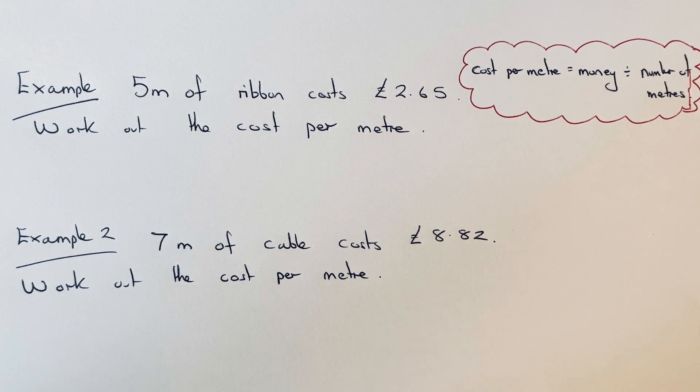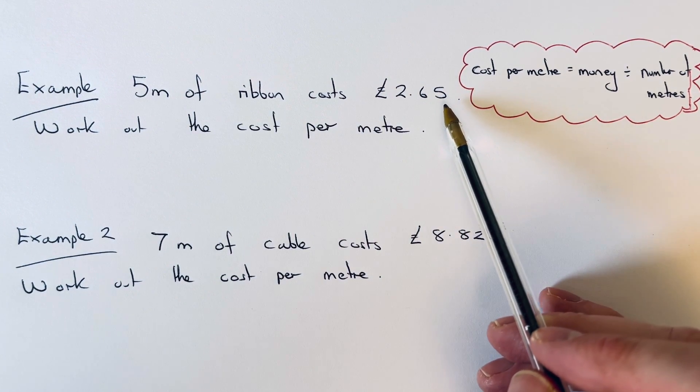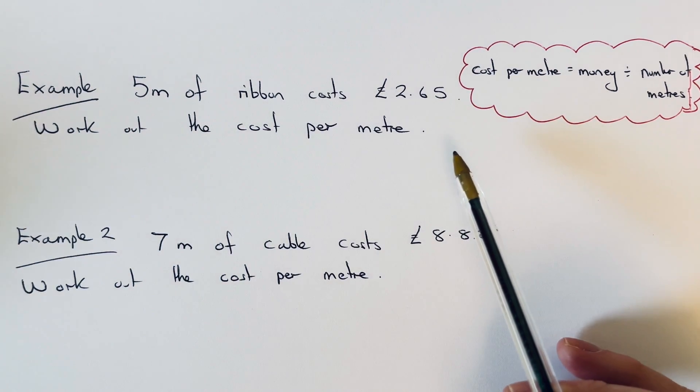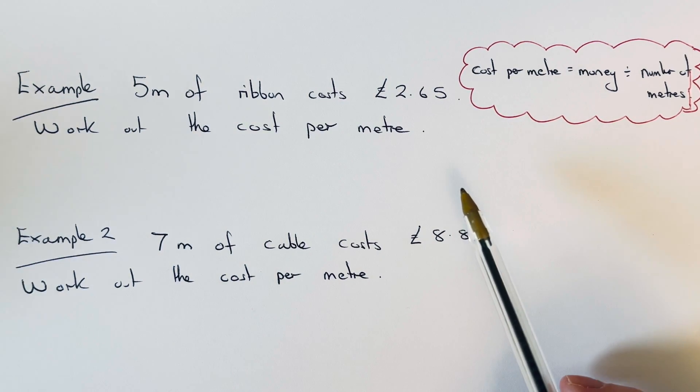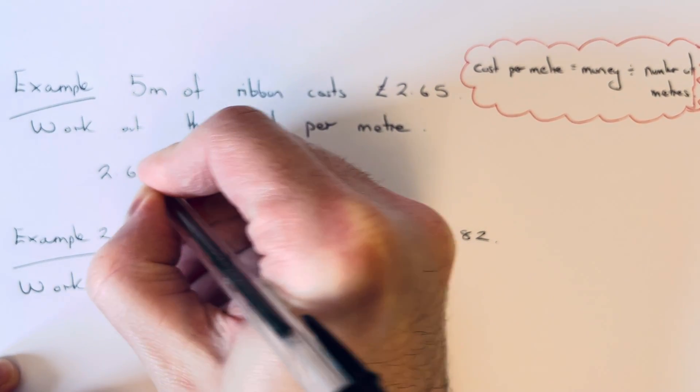Let's have a look at the first example. Five meters of ribbon cost £2.65. Work out the cost per meter. So to do this, we get the money which is £2.65, and you...